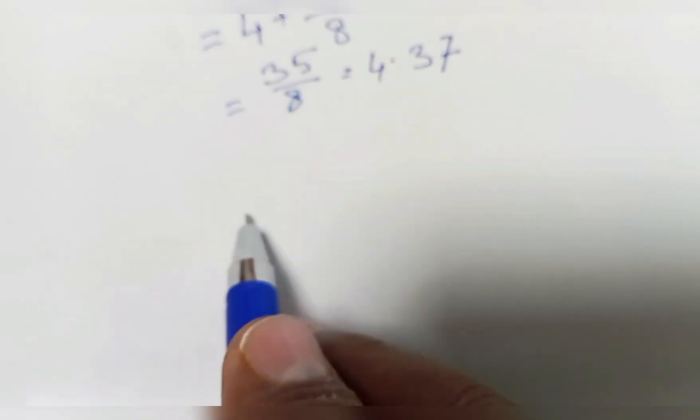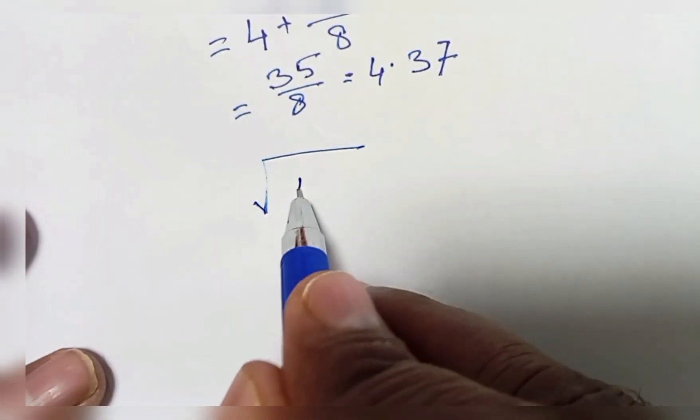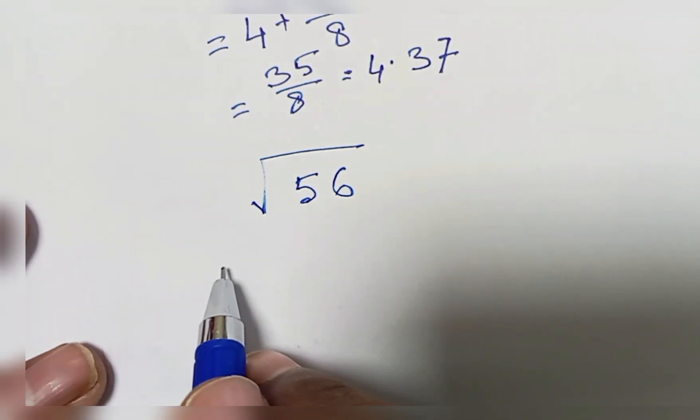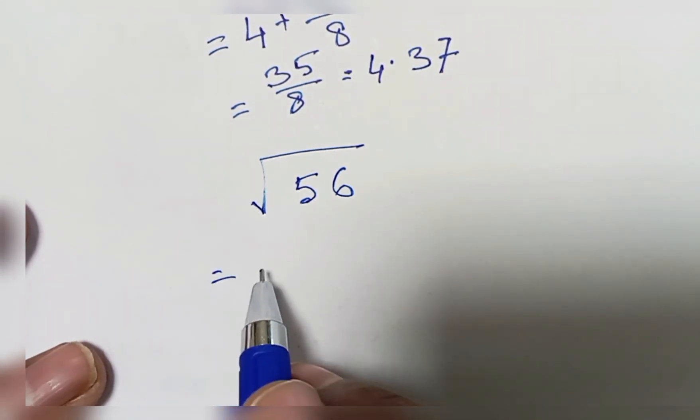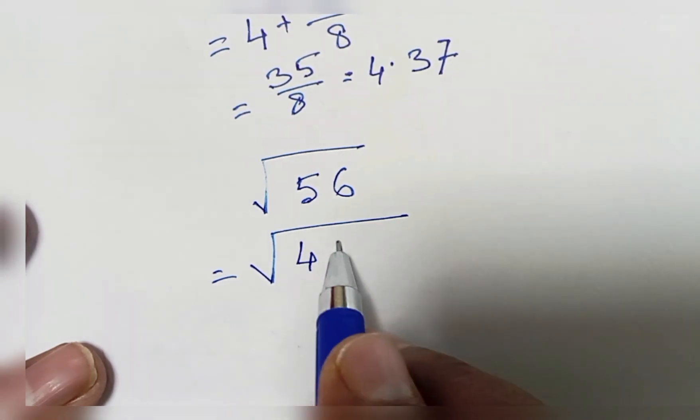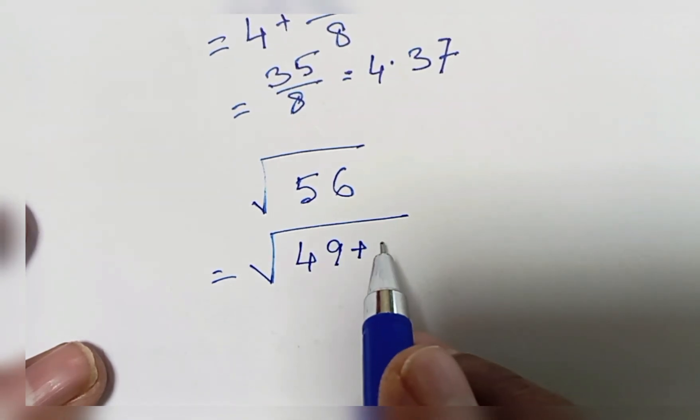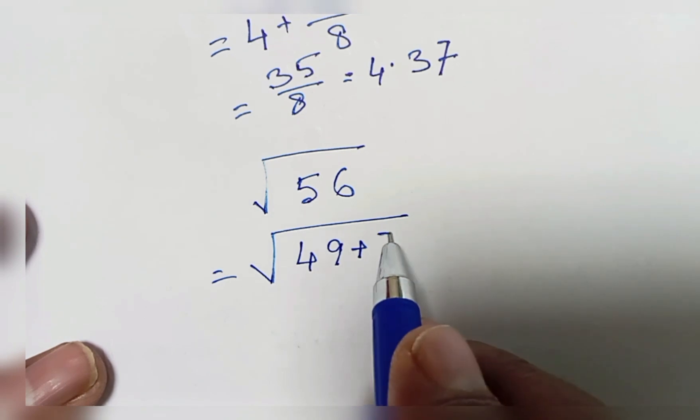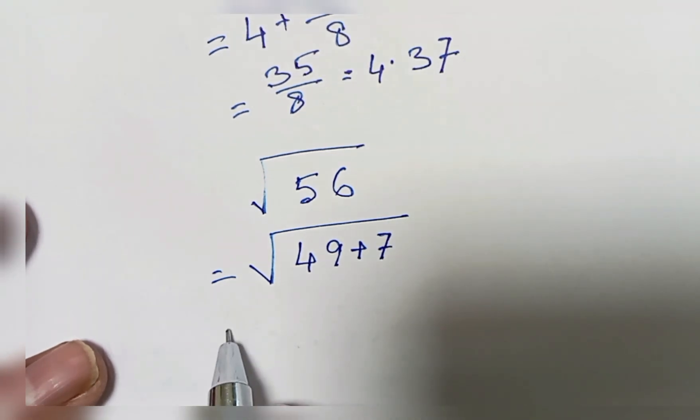Next, if you want to solve this problem, 56 can be written as 49 plus 7, so you can solve this problem.